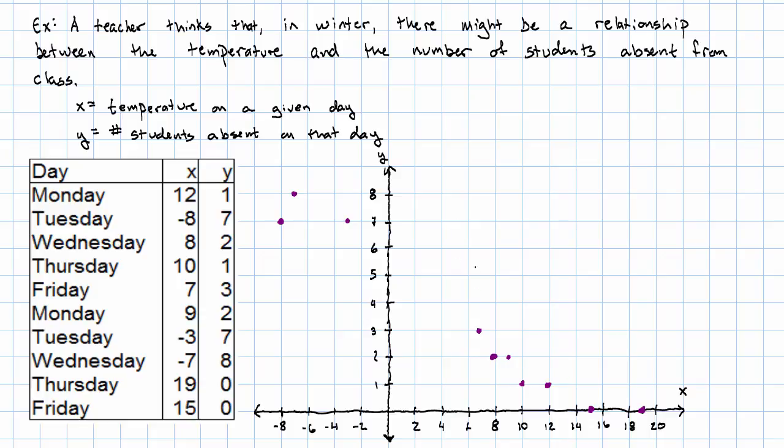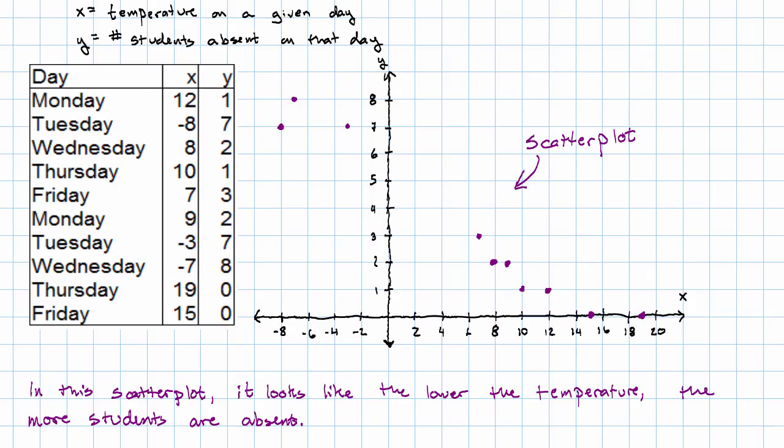So this picture is called a scatter plot, and one of the reasons that we draw them is to try to reveal a pattern in our data. Looking at this pattern, it looks like the higher the temperature, the fewer students are absent, and the lower the temperature, the more students are absent. We can't really say better than that at the moment.